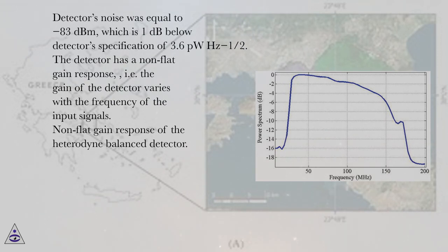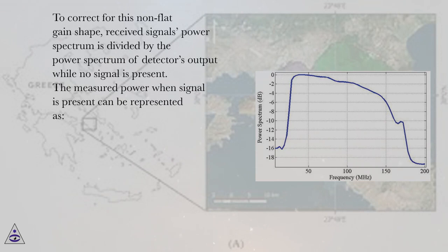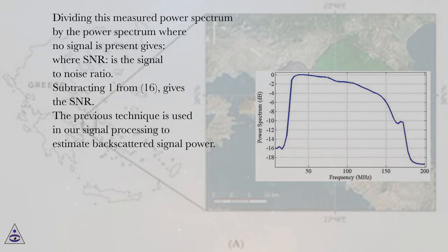The detector has a non-flat gain response, i.e., the gain of the detector varies with the frequency of the input signals. To correct for this non-flat gain shape, the received signal's power spectrum is divided by the power spectrum of the detector's output while no signal is present. The measured power when a signal is present can be represented accordingly; dividing this measured power spectrum by the noise power spectrum gives the SNR plus one. Subtracting one from that result gives the SNR. This technique is used in our signal processing to estimate backscattered signal power.